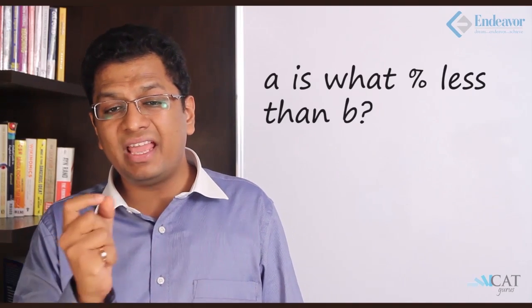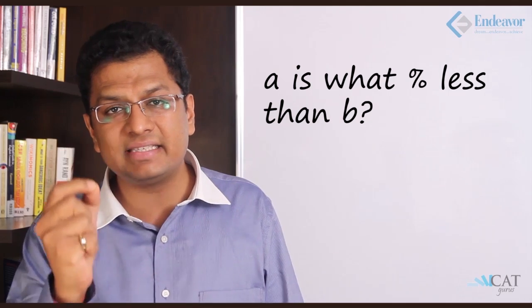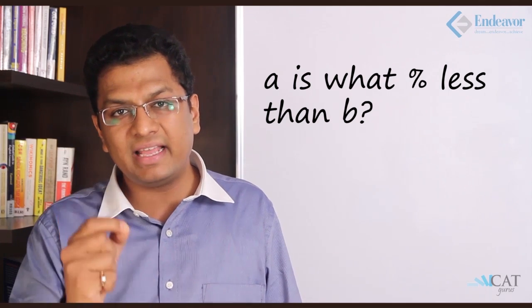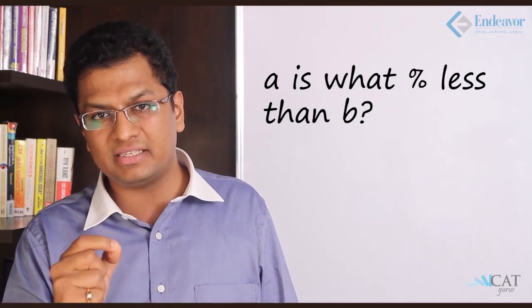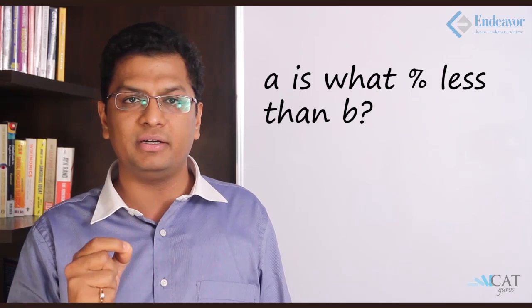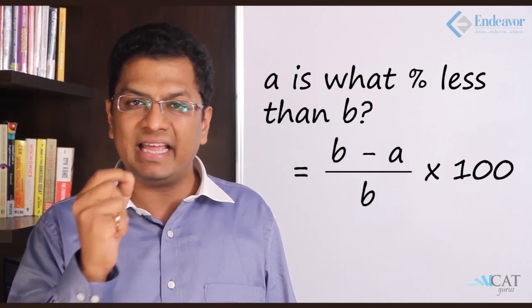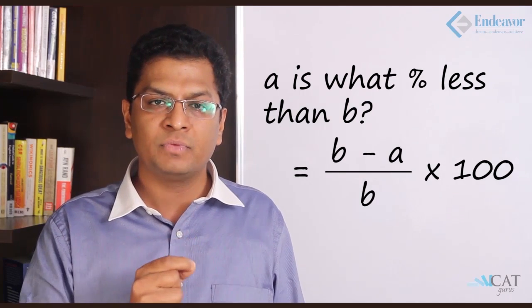Let us take another one: A is what percentage less than B? Again the comparison is with B as a base, so B will become the denominator. But A is less, so it will be B minus A upon B. Here it is important what is the base of comparison. A lot of times we make a mistake on what should be the base. Whatever is being compared to, that is the base.